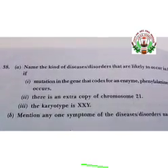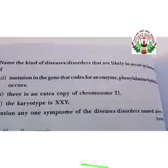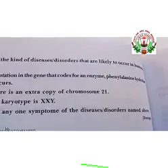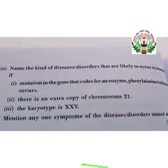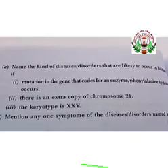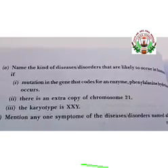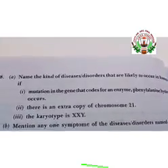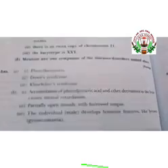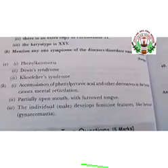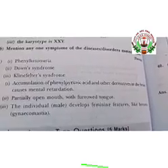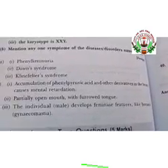The next part is: mention any one symptom of the diseases or disorders named above. You have to write the symptoms of phenylketonuria, Down's syndrome, and Klinefelter's syndrome. For phenylketonuria, there is accumulation of phenylpyruvic acid and other derivatives, which causes mental retardation.